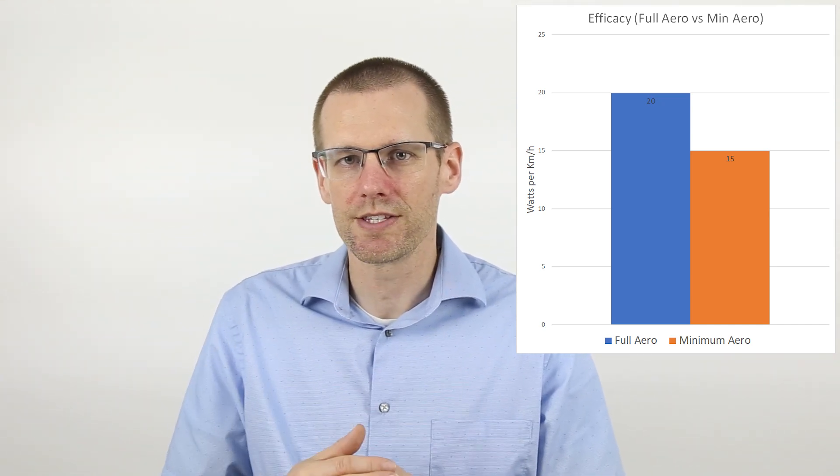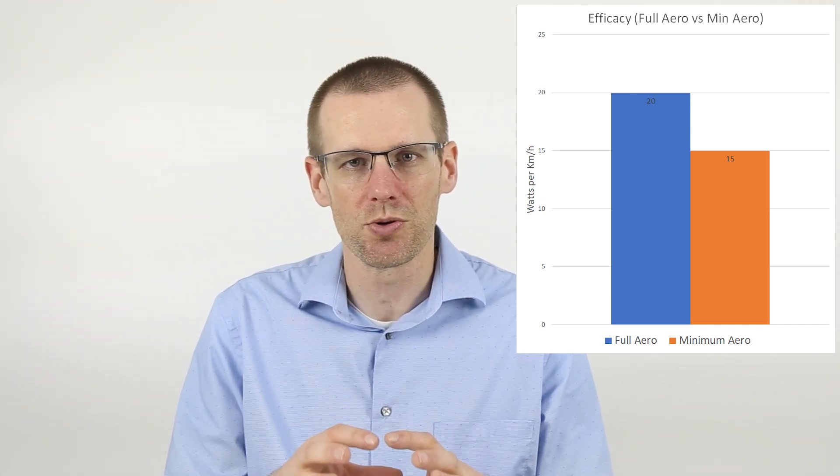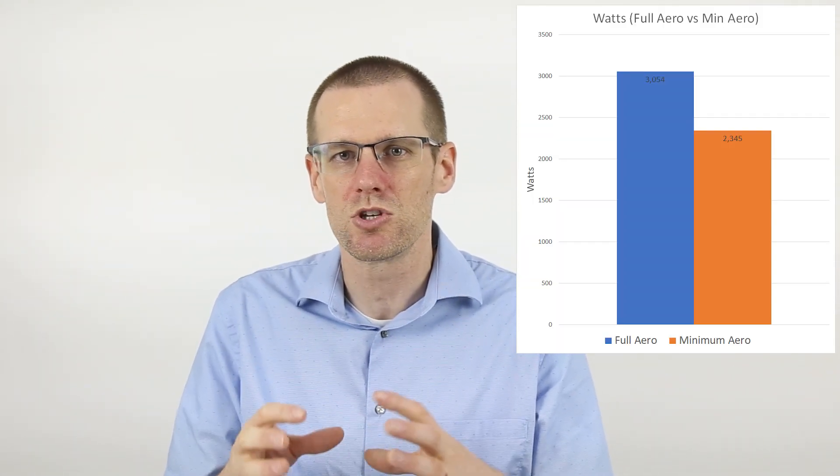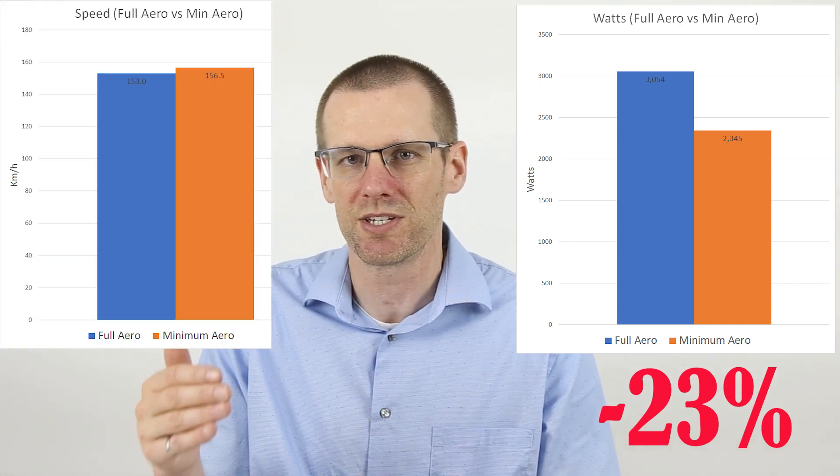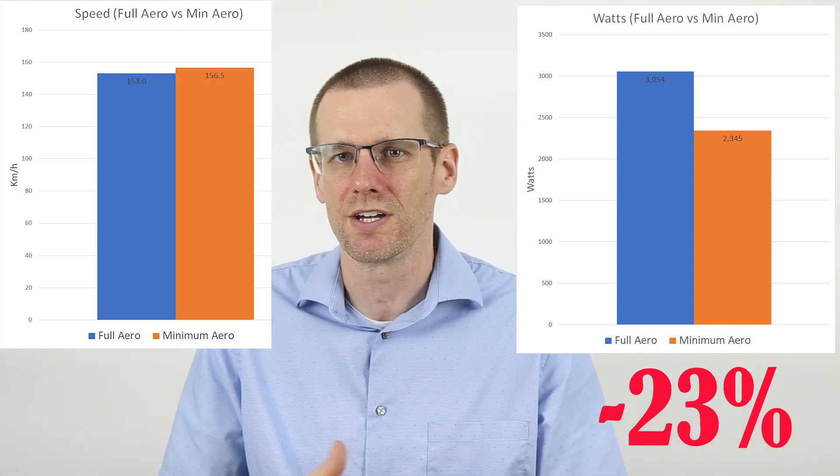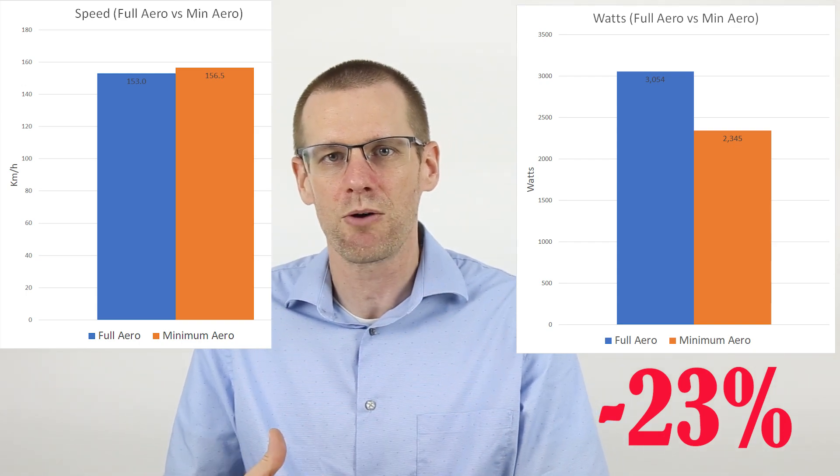And when you look at the percentage difference of the amount of power we're consuming with full aero versus minimized aero, we're dropping about 20 plus percent in power consumption, assuming that we hit the same top speed. That is a massive difference when you're considering the amount of power it takes to maintain that top speed. This absolutely tells us that it is very well worth reducing the amount of aero that we have to make top speeds, which is pretty much what we assume, but this puts it into numbers and allows us to really understand how much of a difference it is making.